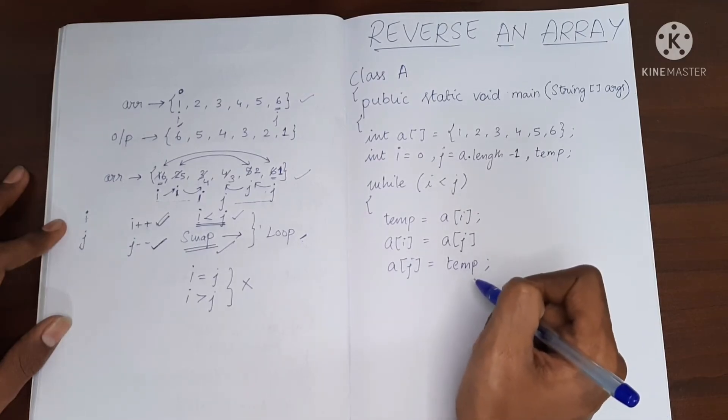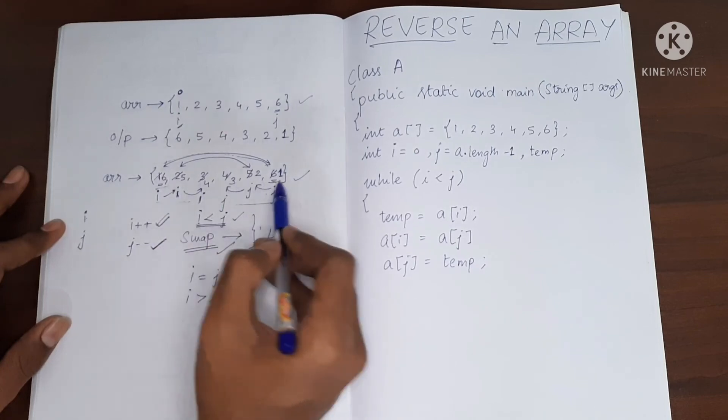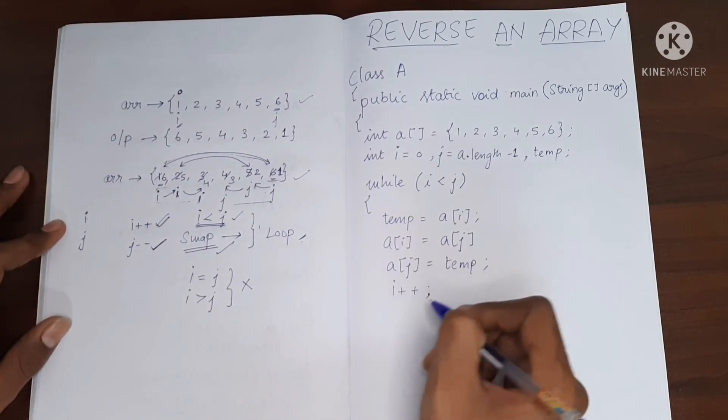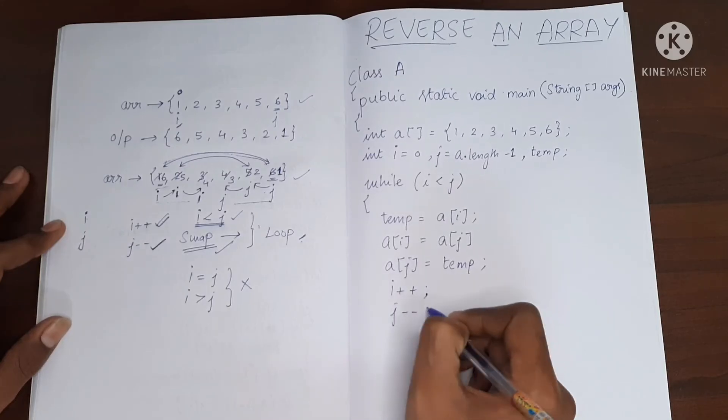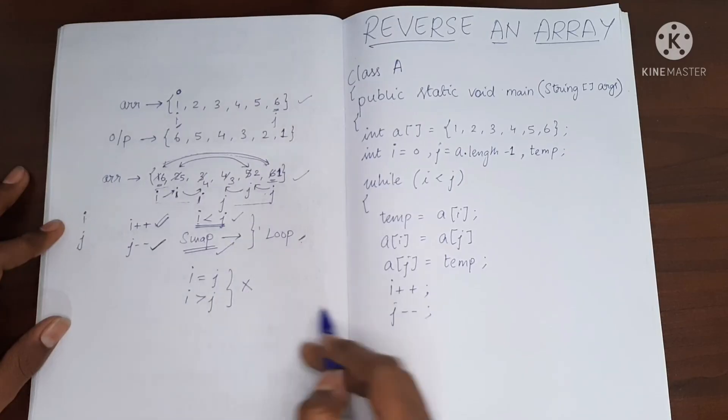So in this way we are going to swap both the values at i and j. Now I have to increment i so that I move to the next location and I have to decrement j so that I move to the previous location.